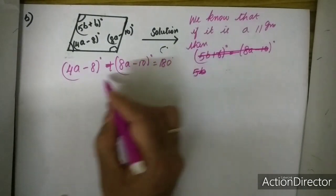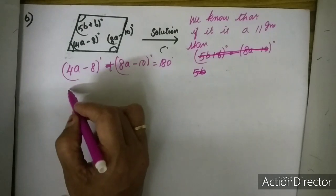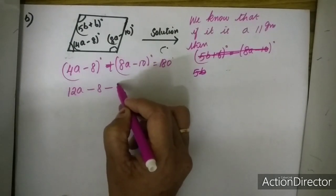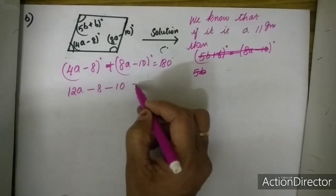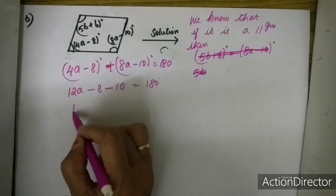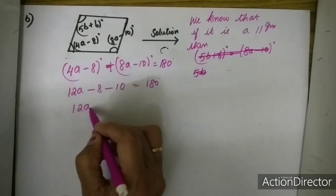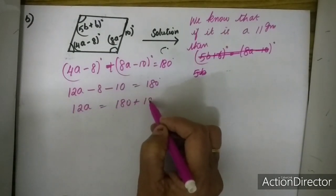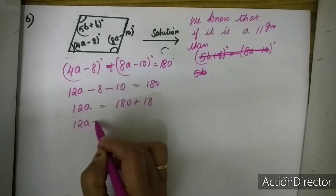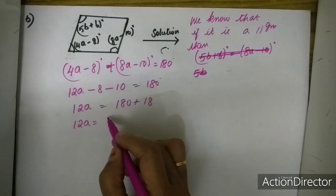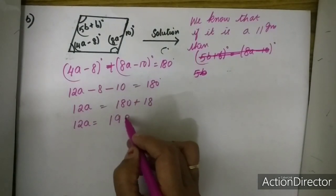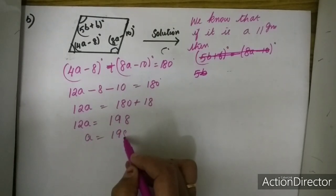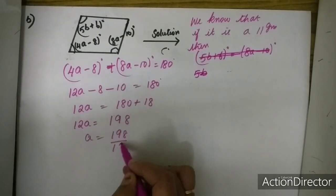Now, what is 4A plus 8A? 12A minus 8 minus 10 is equal to 180 degrees. So 12A minus 18 is equal to 180, which gives 12A is equal to 180 plus 18, so 12A is equal to 198.